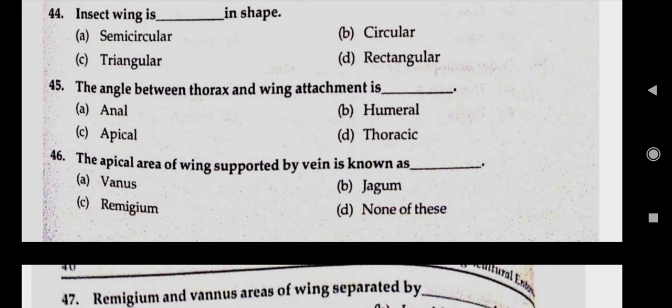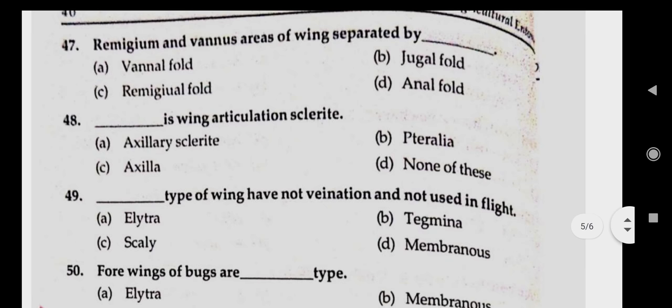Question number forty-five: the angle between the thorax and wings attached is. Answer B, humeral. Question number forty-six: the apical area of wing supported by veins is known as. Answer C, remigium.